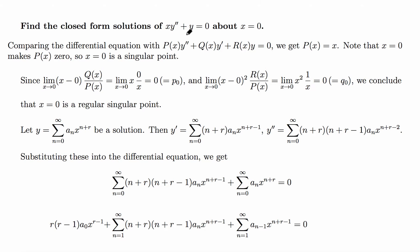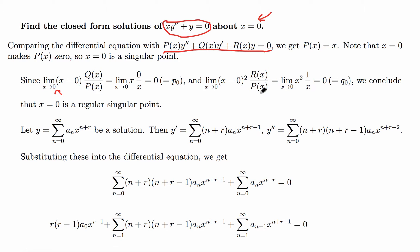We compare the given equation with the standard form and get that P(x) = x, which becomes 0 when x = 0, so x = 0 is a singular point. We then evaluate the two limits: limit as x→0 of (x−0)·Q(x)/P(x) = 0, and limit as x→0 of (x−0)²·R(x)/P(x) = 0. Both limits exist, so x = 0 is a regular singular point.